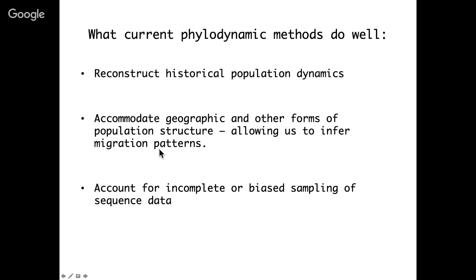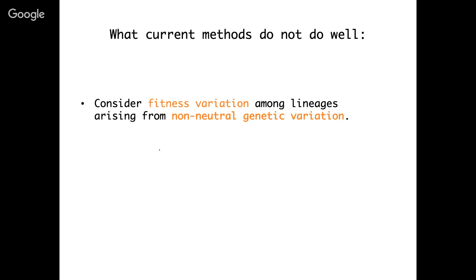These are some of the things that current phylogenetic methods really do well. One thing they do not do well is to incorporate non-neutral genetic variation that considers that fitness might vary dramatically across different lineages in a pathogen phylogeny. This is something we'd really like to be able to do, because I don't think many of us would be interested in rapidly evolving pathogens if they didn't have the ability to adapt and escape host immunity or antimicrobial drugs. So it's ironic that adaptive evolution really hasn't been incorporated into these phylogenetic models.